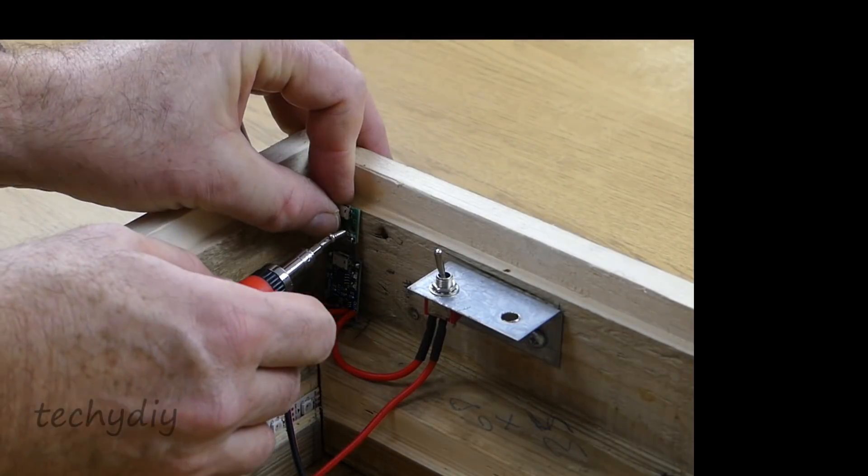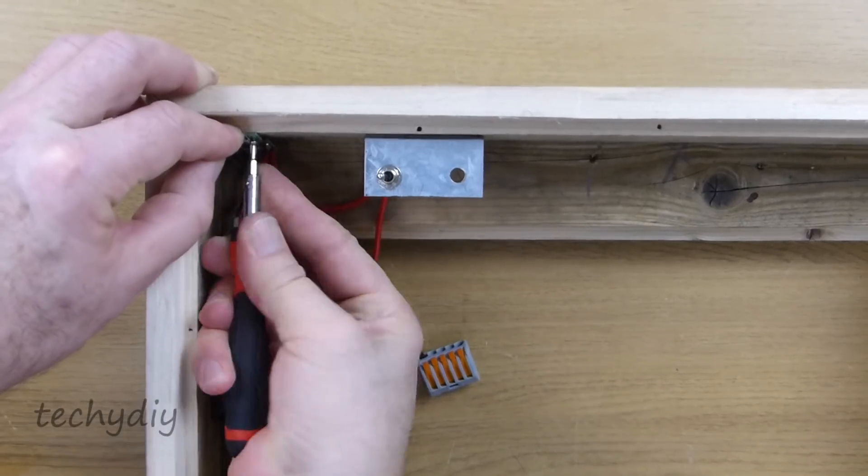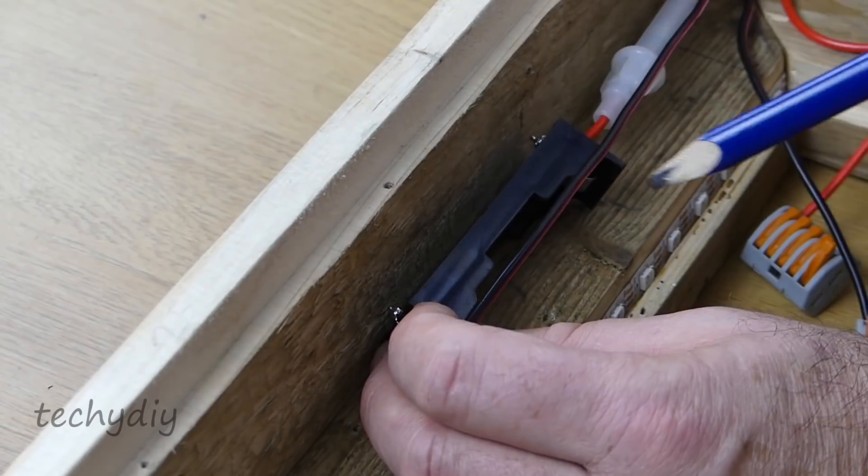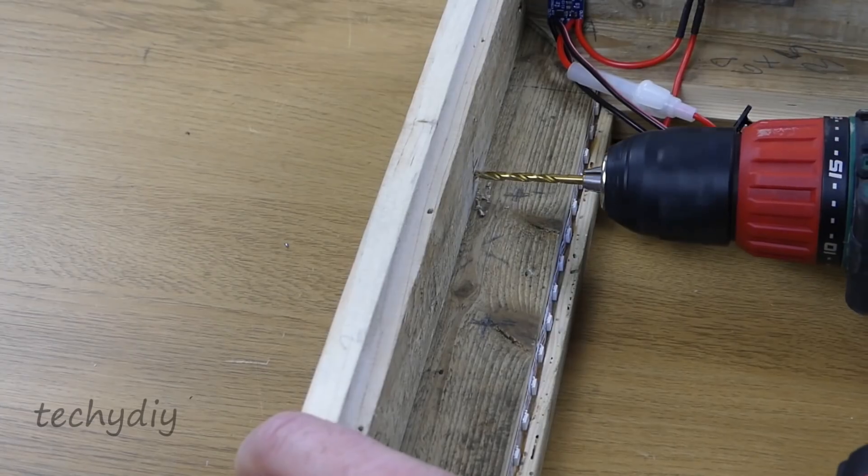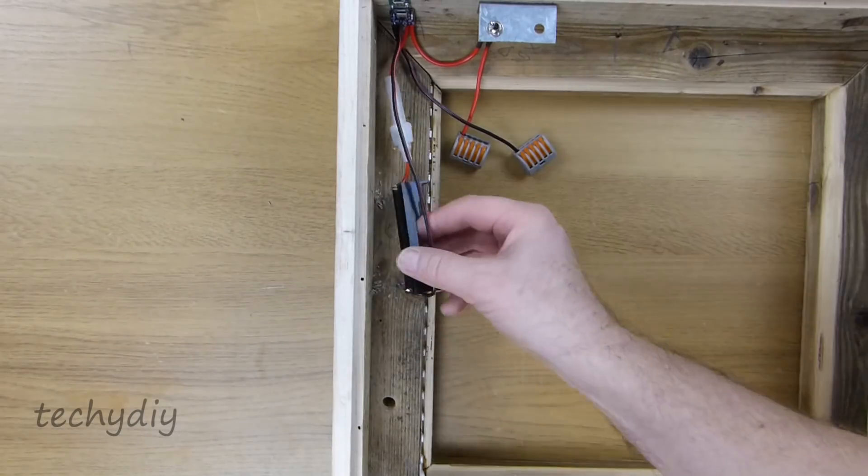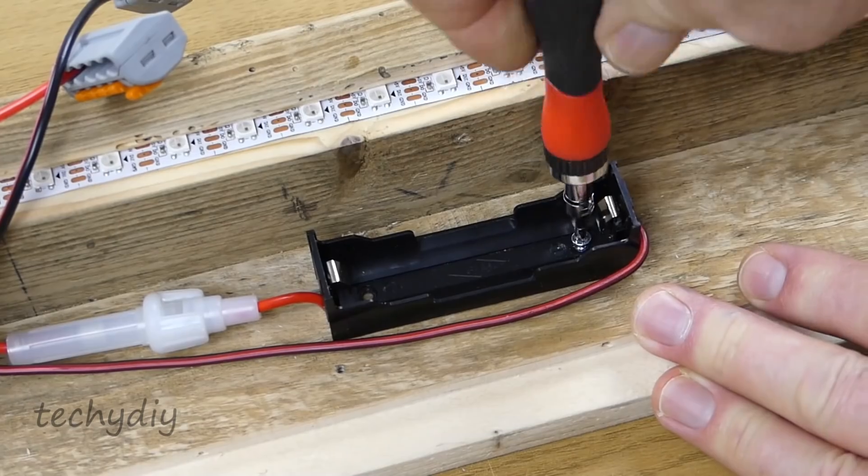The USB breakout board is screwed into the side where I had already cut out a section of the plywood back for the power cable. The positions of the connection pins on the battery holder are marked and a couple of holes drilled for clearance. The battery holder is then screwed into position.